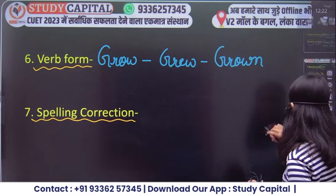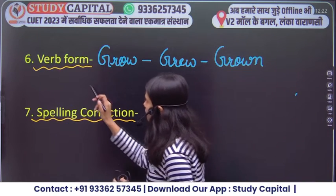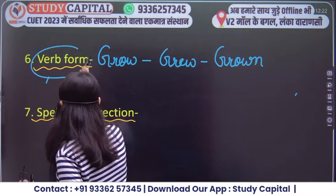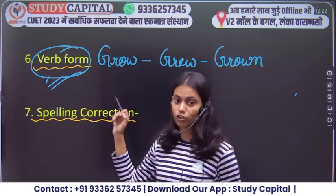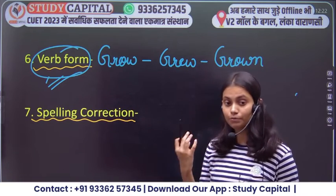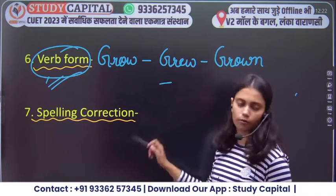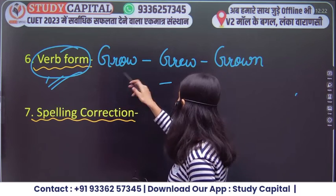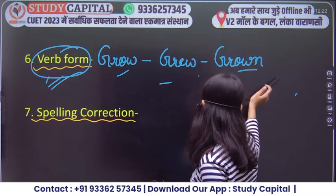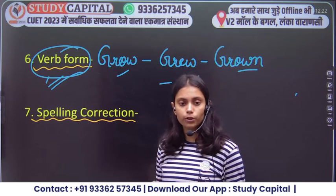Next we have verb form. You will see some type of verb form question — maybe it will come as match the following, or it could also be in fill-up format. For example: grow, grew, grown — these are verb forms.